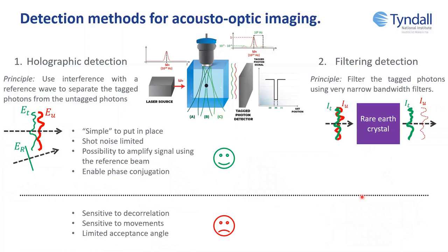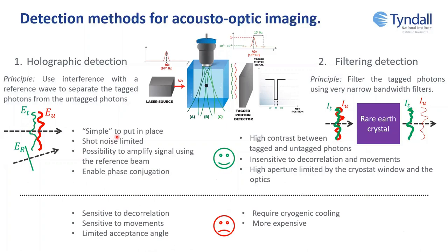The advantage of holographic detection is it's simpler and gives the possibility to amplify the beam using the reference. The problem is it's very sensitive to decorrelation and movement, and has a low acceptance angle limited by the camera or crystal. Spectral hole burning detection has high contrast and is insensitive to decorrelation and movement, but requires cryogenic cooling of the crystal to four Kelvin or less, making it much more expensive to implement.